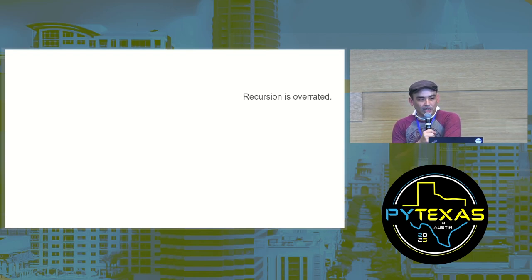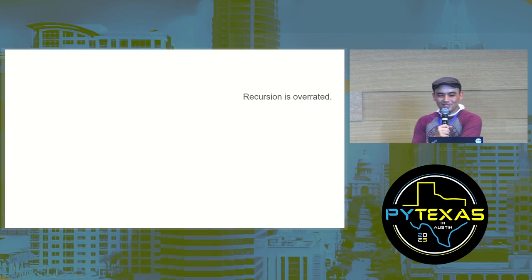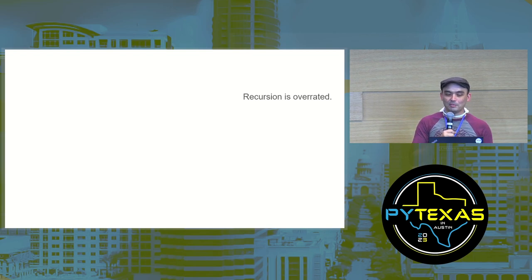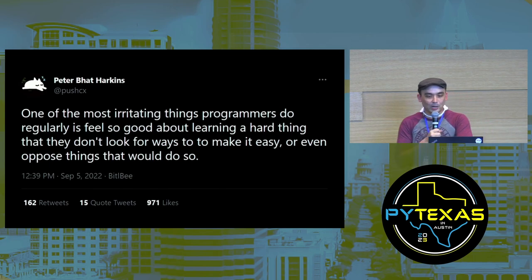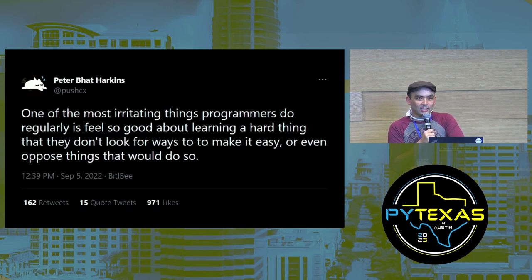Recursion is overrated — or at least overused. People like to use recursion when they don't have to, and it doesn't make the code simpler — it does the opposite. But programmers do this anyway because one of the most irritating things programmers do is feel so good about learning a hard thing that they don't look for ways to make it easy, or even oppose things that would do so.